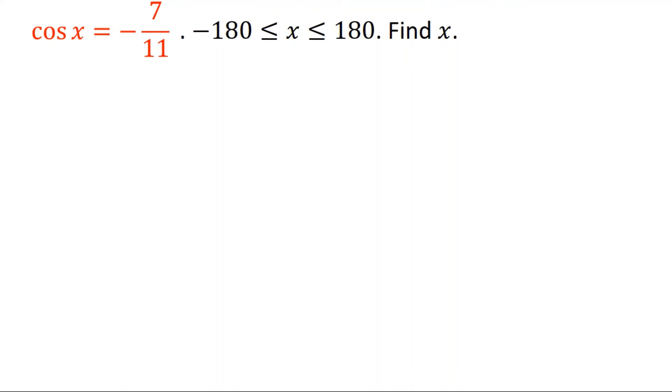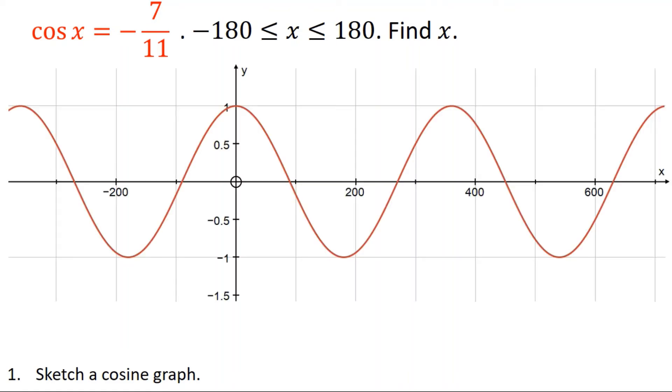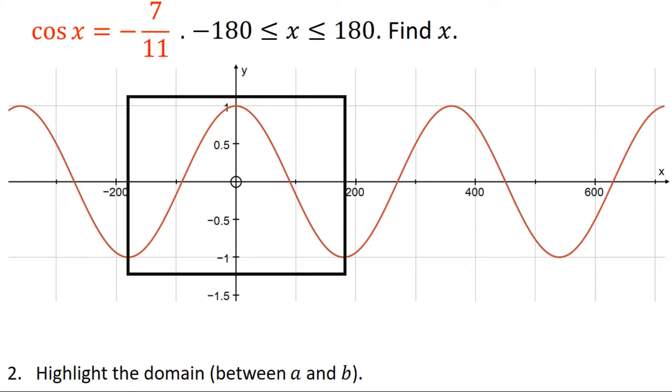So the first thing I'm going to do every single time is sketch a cosine graph. Then I'm going to highlight the domain I'm talking about, in this case here, between negative 180 and 180. Then I'm going to draw on the line that goes through y equals negative seven over 11, which is down there. And the lines going up to the x-axis.